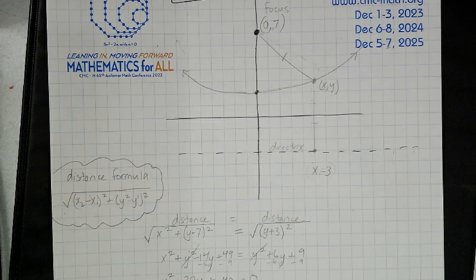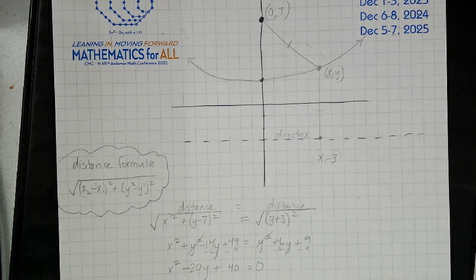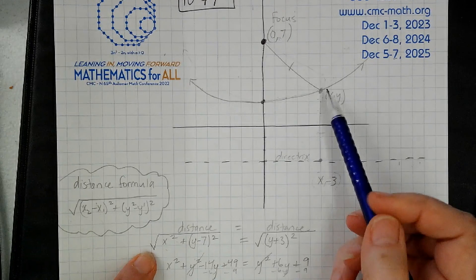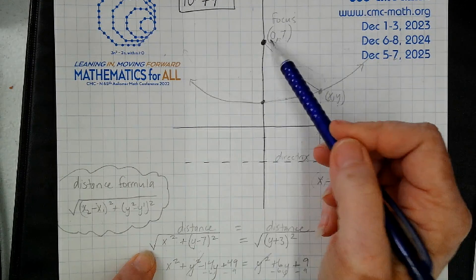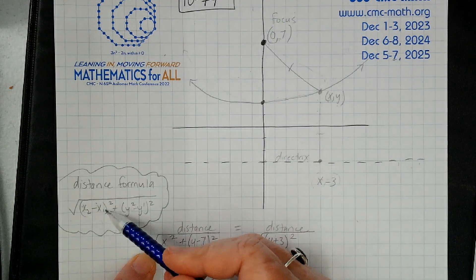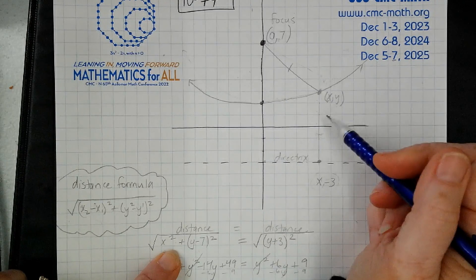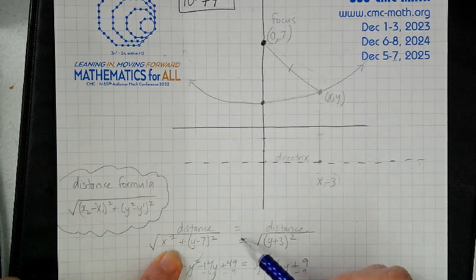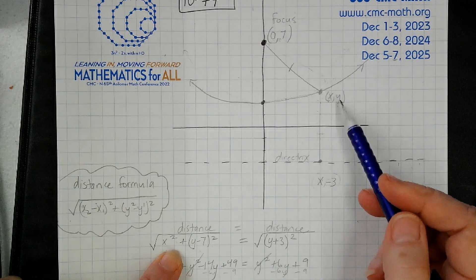So I went x₂ minus x₁, so that's x minus 0 squared, because I'm just following my formula, and then (y - 7)² following my formula equals, and then I'm going to do the same thing here.